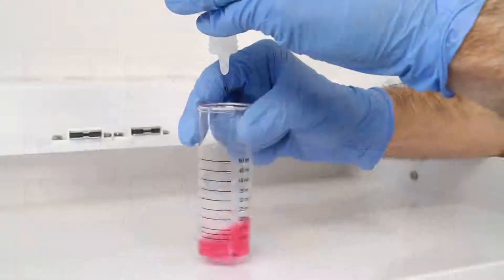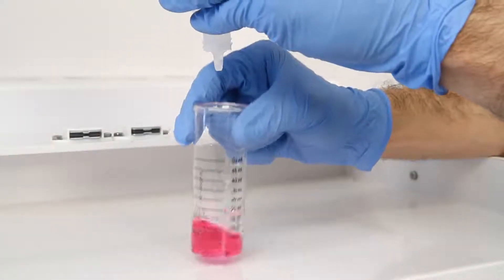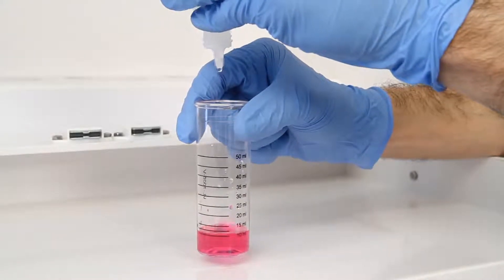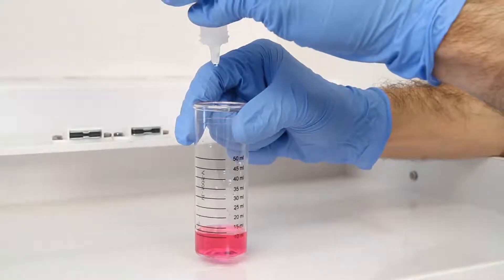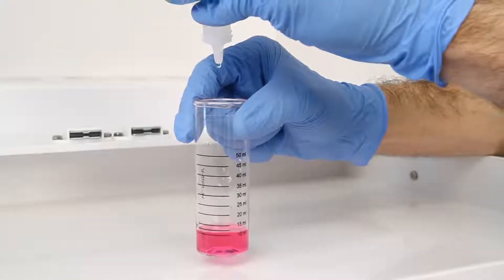The bottle contains a dropper tip, therefore it's important to hold the bottle vertically to get a consistent drop size. After the addition of each drop of titrant, swirl the vial to make sure the sample is properly mixed. Count the number of drops during this step.